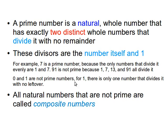One itself divides one, but that gives only one divisor, not two distinct ones. All natural numbers that are not prime are called composite numbers.